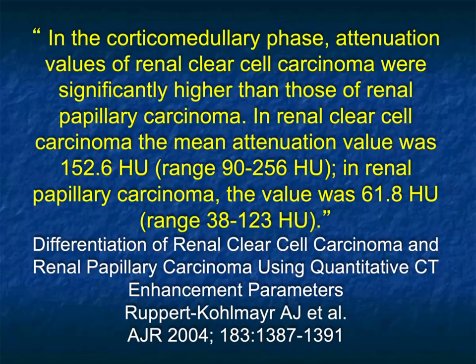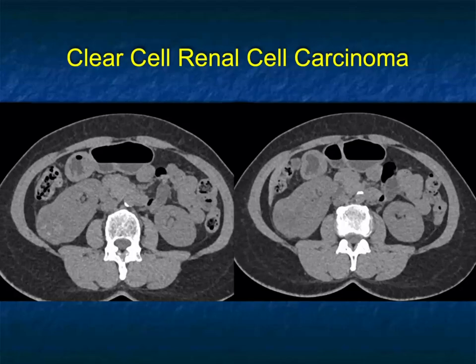This article has held true over time. Clear cell renal cell carcinoma has a mean attenuation value of 152, while papillary is 61. There's a big spread between 152 and 61, so what most people will say — and it works out very nicely — is that if a lesion measures under 100 Hounsfield units max, it's likely papillary; if it's over 100, it's likely clear cell, and you'll be probably 95 percent accurate.